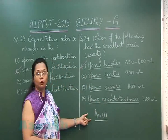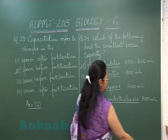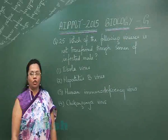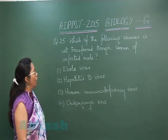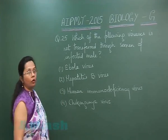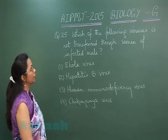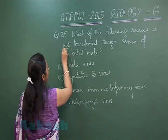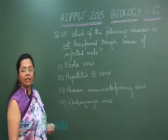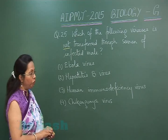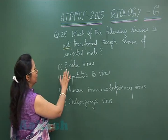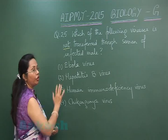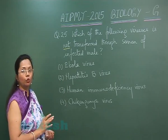Question 25: Out of these 4 viruses, which is not transferred through the semen of an infected male? The 1st, 2nd, and 3rd viruses — all three of them can be transferred through semen.